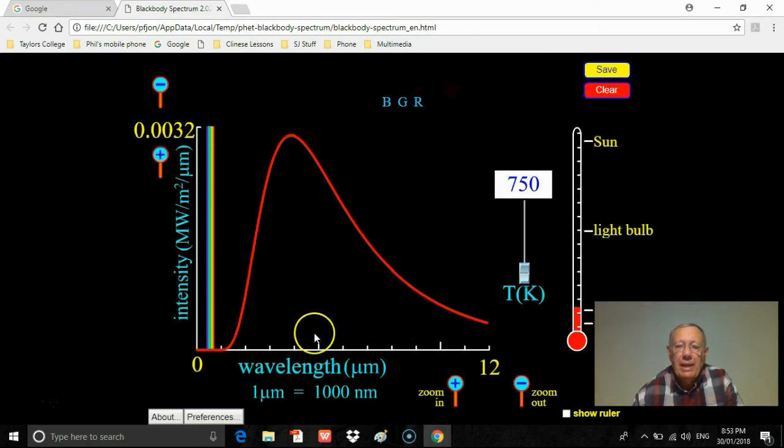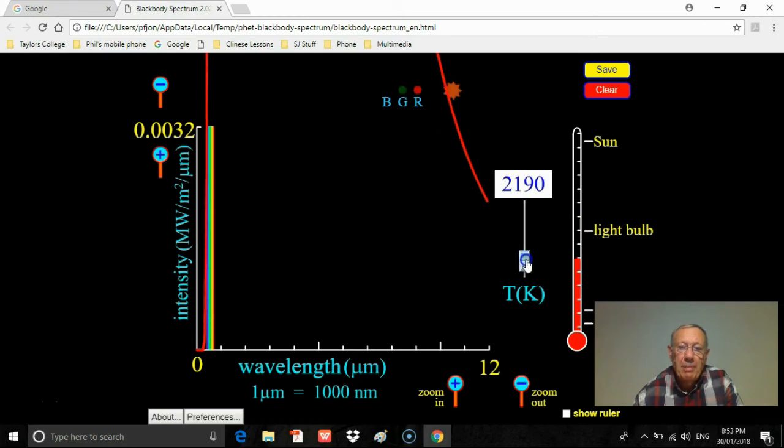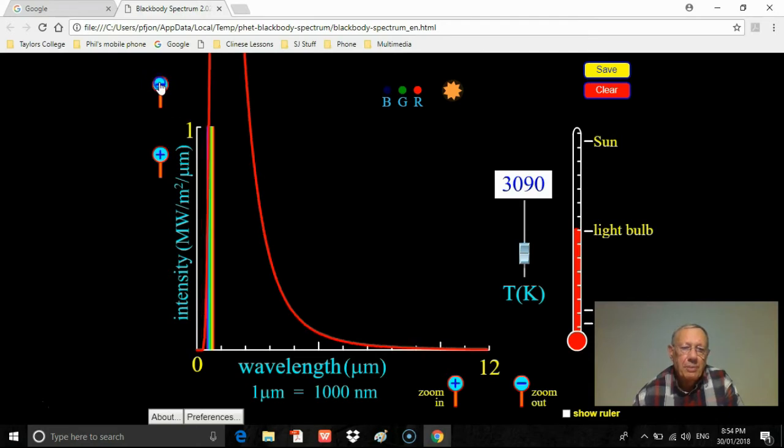Let's have a look then at a light bulb. Now a light bulb of course has a much higher temperature. I'll move this up and adjust that to the height here. That's too high, so that's roundabout 3090 degrees Kelvin. Again, what we've done here is seeing that we've got an object which is giving out a lot more energy.